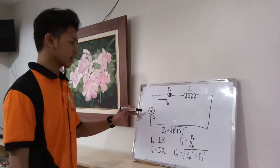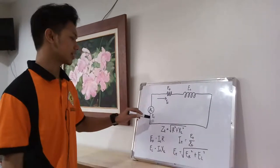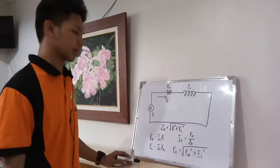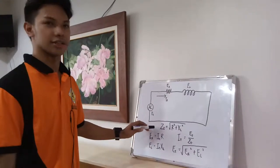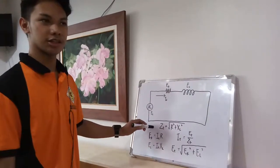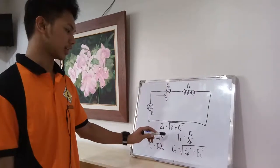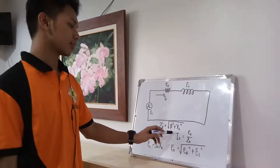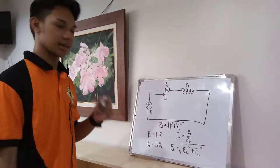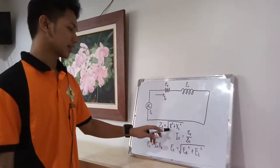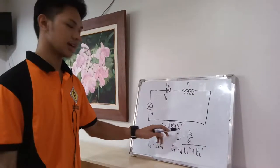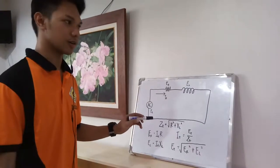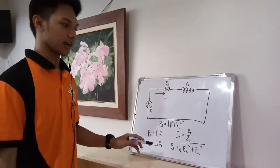Here we have a circuit with an AC source E sub T, a resistor, an inductor, and a current flowing. Here is the formula for getting the magnitude of the impedance: Z sub T is equal to the square root of R squared plus X sub L squared, where ZT is the total impedance, R is the resistor, and X sub L is the inductive reactance, which is ωL or 2πFL.